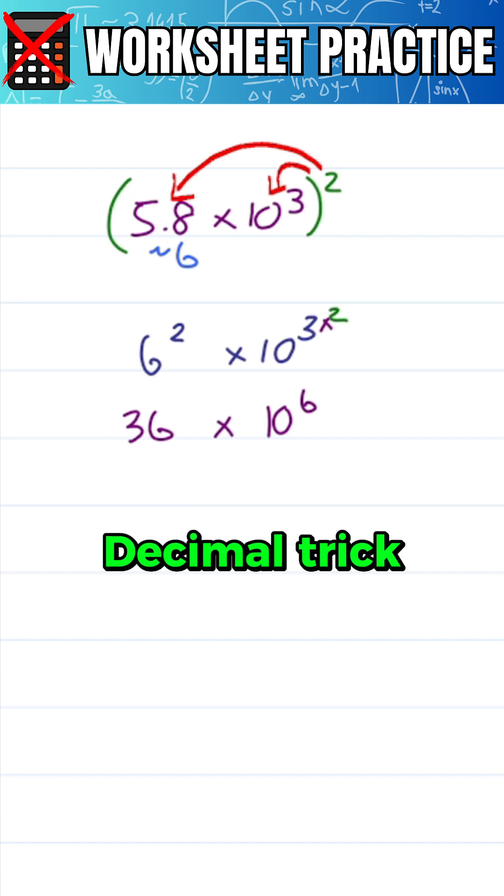We'll use the decimal trick, which tells me if I move 1 to the right, 1 to the left, it's like multiplying by 10 over 10 equals 1 and doesn't change the value.